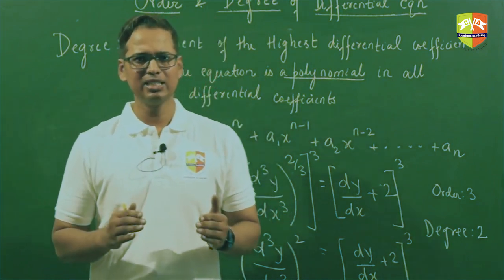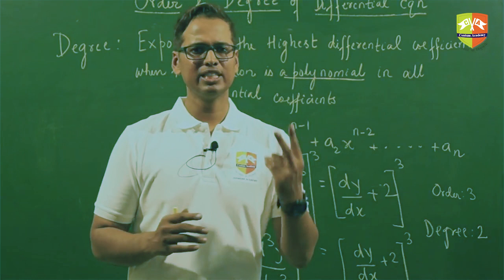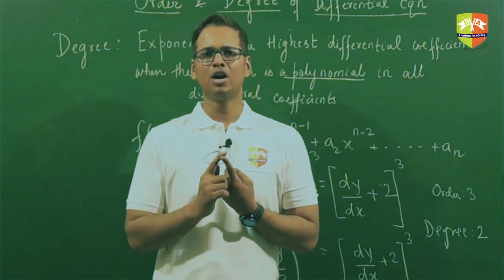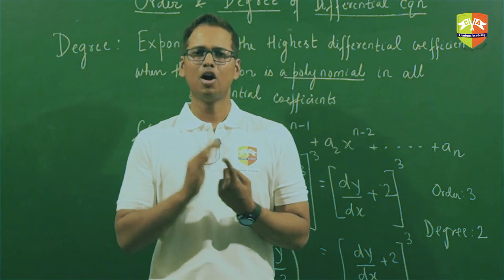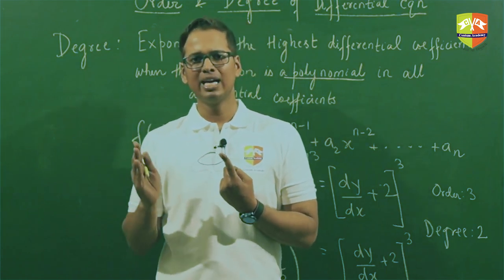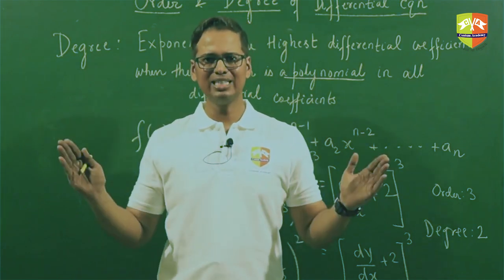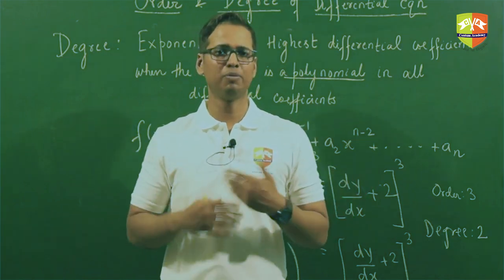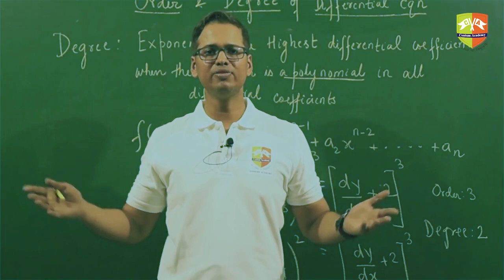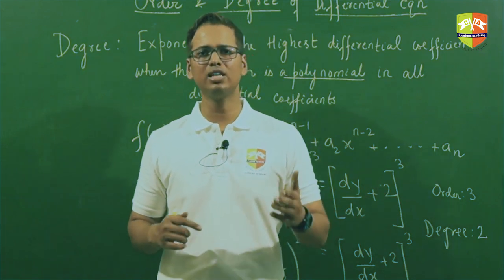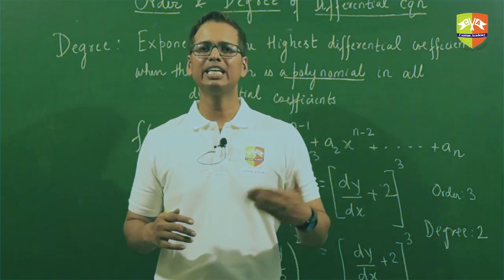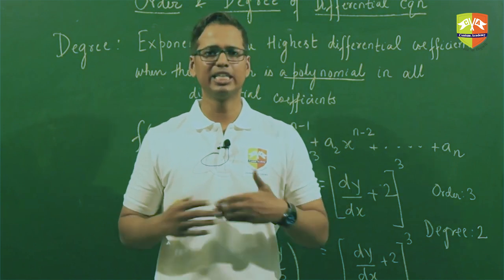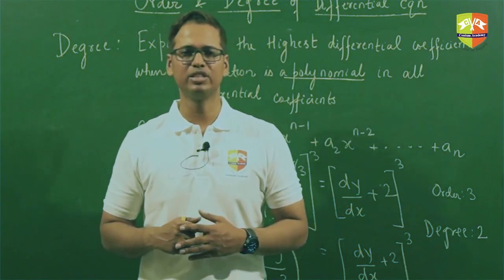While finding the degree, two things must be kept in mind: identify the exponent of the highest order differential coefficient, and convert the differential equation into polynomial form in all the differential coefficients. If it cannot be converted to polynomial form, the degree cannot be found — we say the degree does not exist for that differential equation.